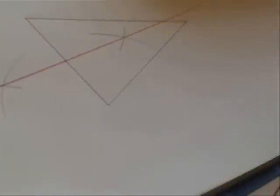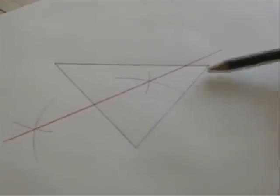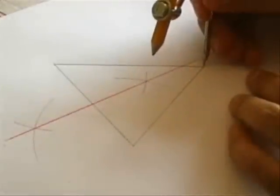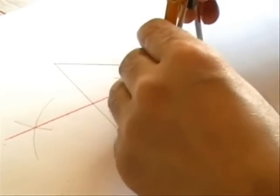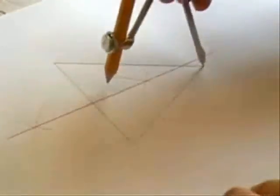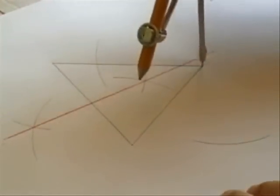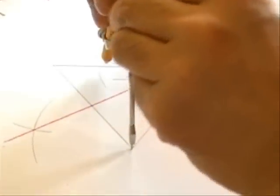I'm going to repeat the process and find the perpendicular bisector of this length here. Again, compass point on one edge, going past the halfway point, draw an arc above, below. Don't change the aperture, and cross the arcs there and there.